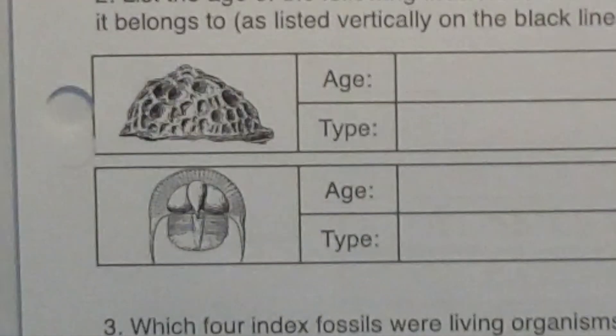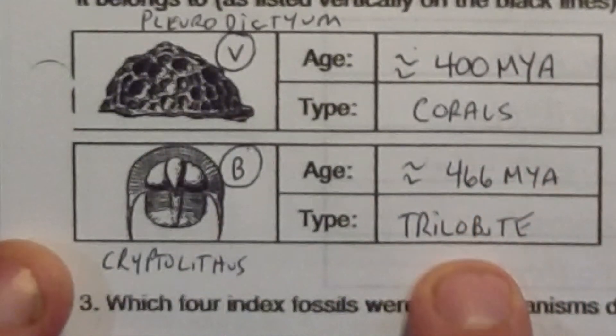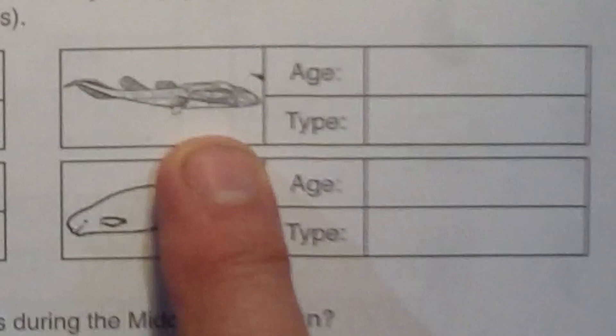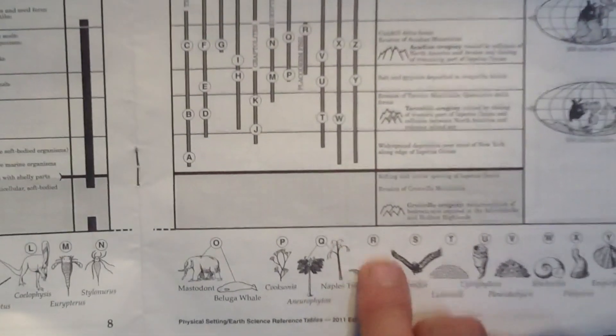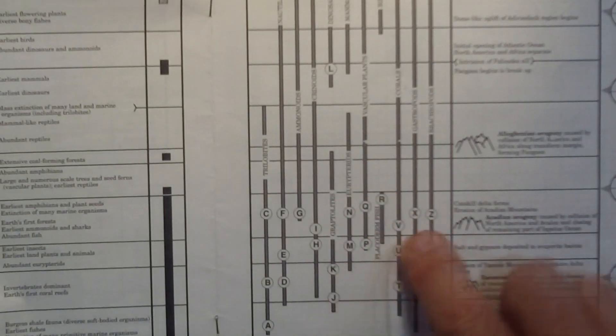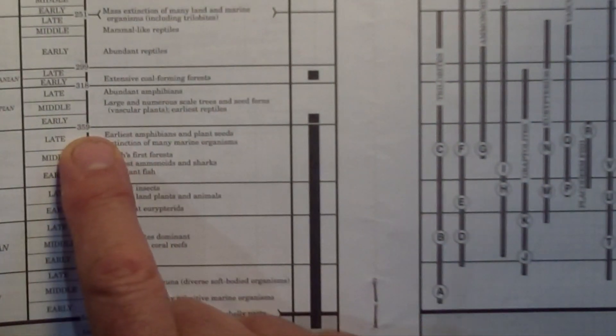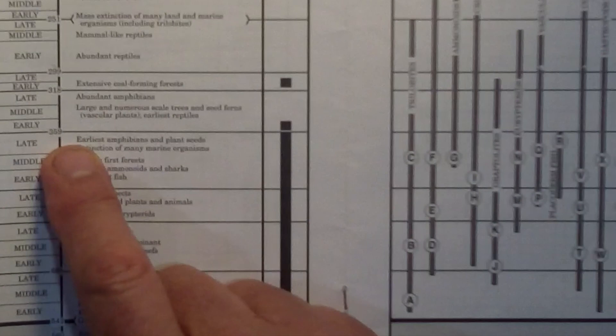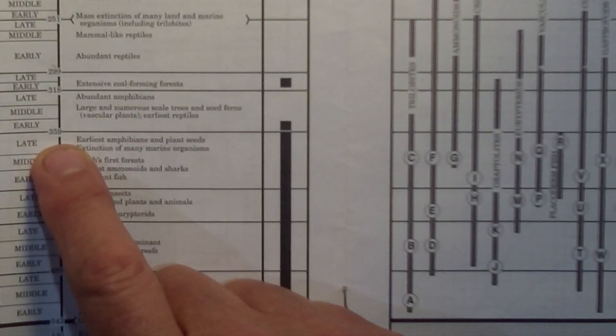The next organism matches up with letter R, which corresponds to the Placoderm fish. These were fish that actually became extinct — this is one of the lines that just ends right here. These fish had an armored outer coating and they became extinct at about 359 million years ago. We know it's a Placoderm fish and if we wanted to estimate, somewhere between 359 and 370 million years ago.